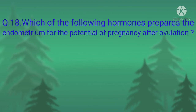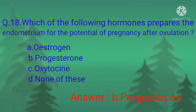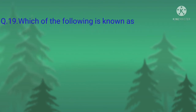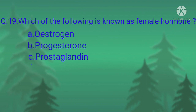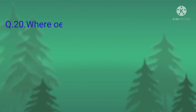Question number eighteen: which of the following hormones prepares the endometrium for the potential of pregnancy after ovulation? Option A, estrogen; option B, progesterone; option C, prostaglandin; option D, oxytocin. The correct option is option B, progesterone.